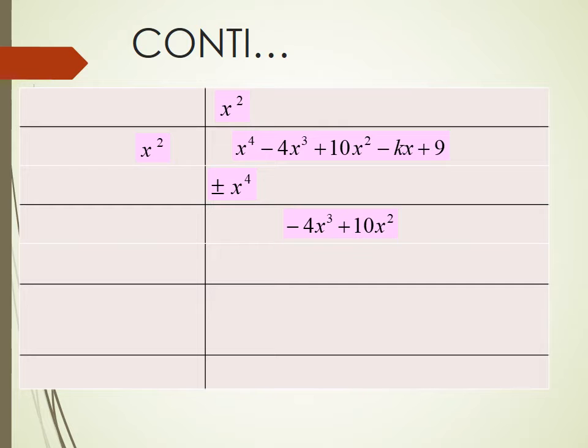x raised to the power 4 minus x raised to the power 4 equals to 0. Now shift down next two terms minus 4x cube plus 10x square. Multiply the answer with 2, we get 2x square. Now think about a number which we multiply by 2x square and get minus 4x cube plus 10x square. Here the number is minus 2x.